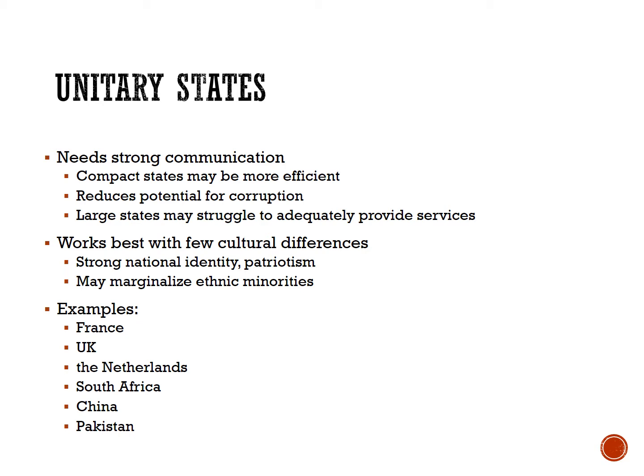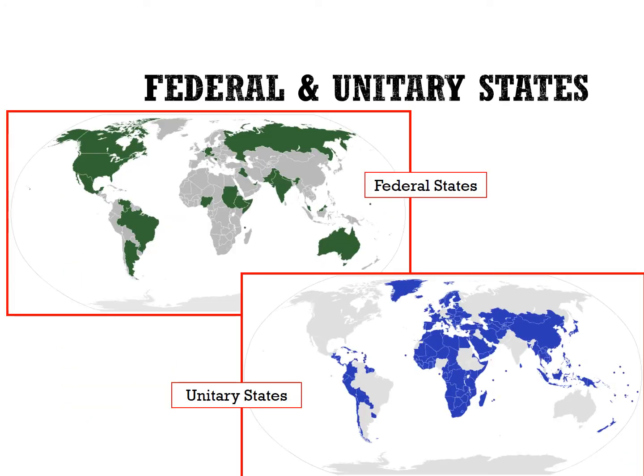Unitary governments work particularly well in countries with few cultural differences and relatively small minority groups. Here are two maps showing federal states in green and unitary states in blue. Remember that while it looks like countries are neatly divided into one of two categories, as with most things in this class, it's a spectrum. Think about the UK — it is technically a unitary state but with a lot of the trappings of federal systems.